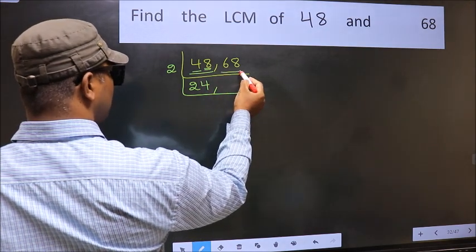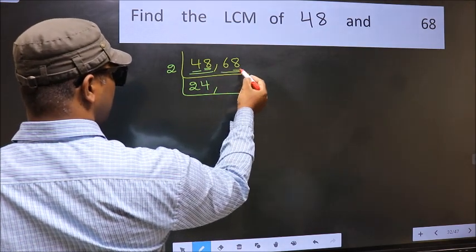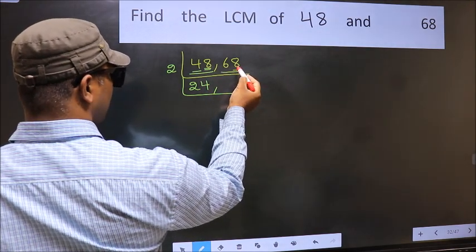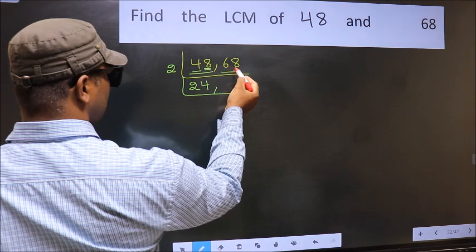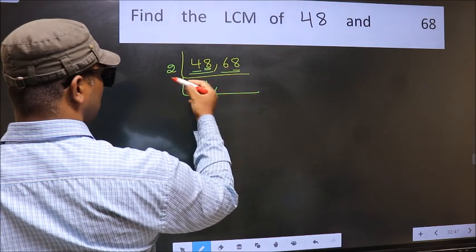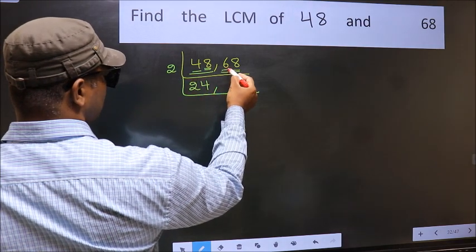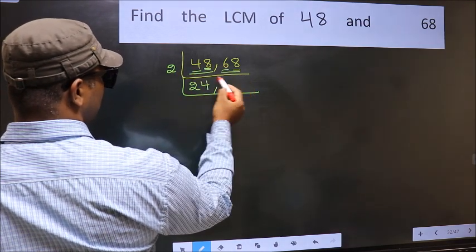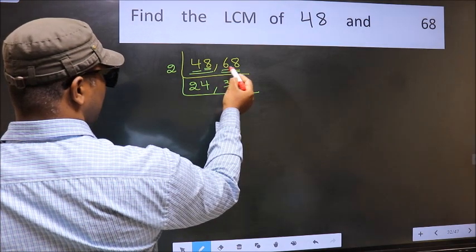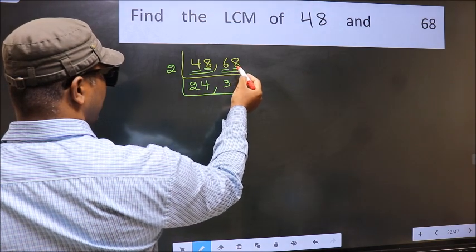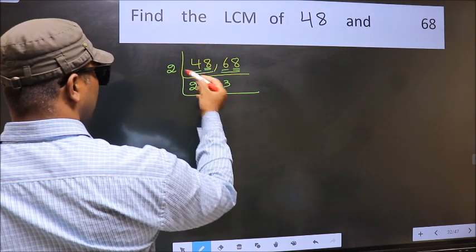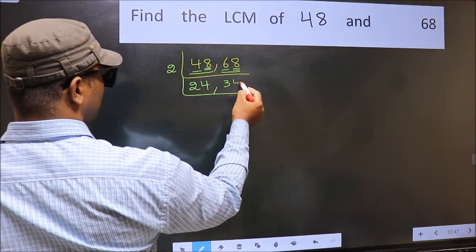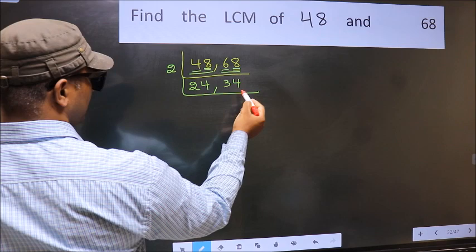Now the other number, 68 — last digit is 8, so this is divisible by 2. First number 6 — when do we get 6 in the 2 table? 2 times 3 is 6. The other number 8 — when do we get 8 in the 2 table? 2 times 4 is 8. So 68 divided by 2 gives 34.